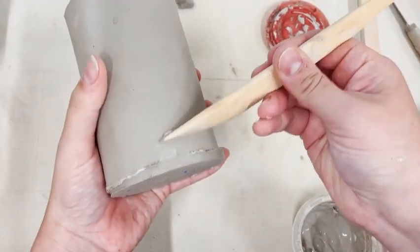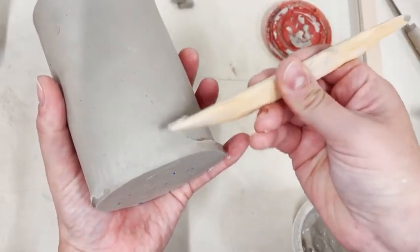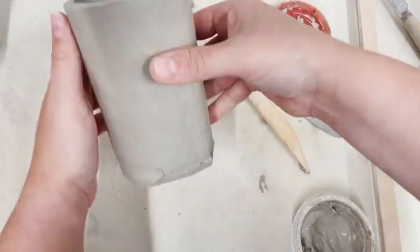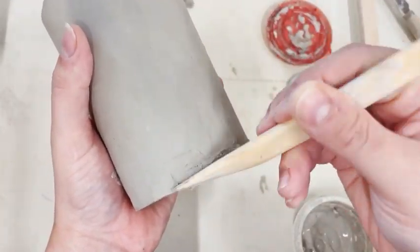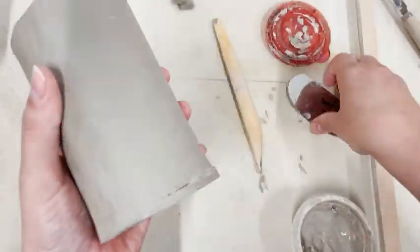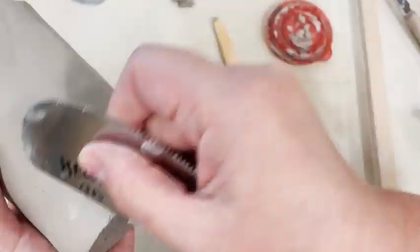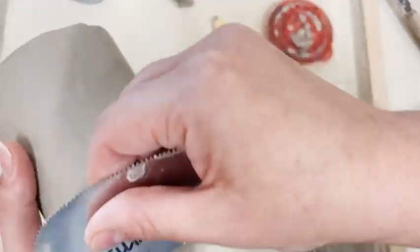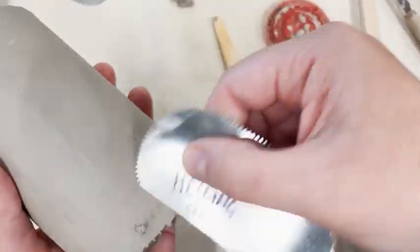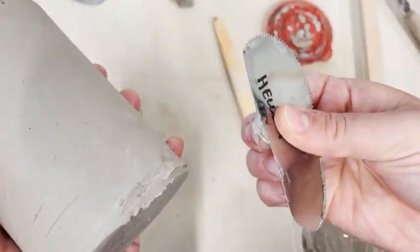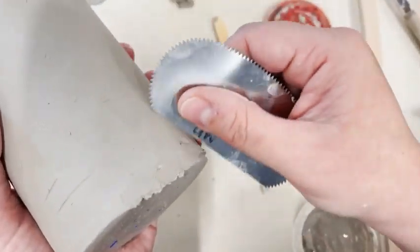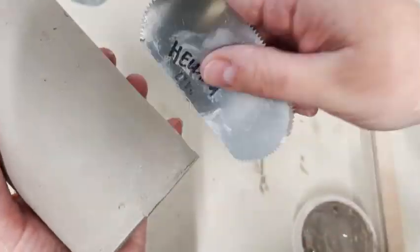So press that down and then I'm going to smooth this in, just running up and down with my modeling tool. And then if you have lots of extra pieces, cut it off, any extra. And then use either the flat side of a serrated rib or the rubber rib to smooth that out.